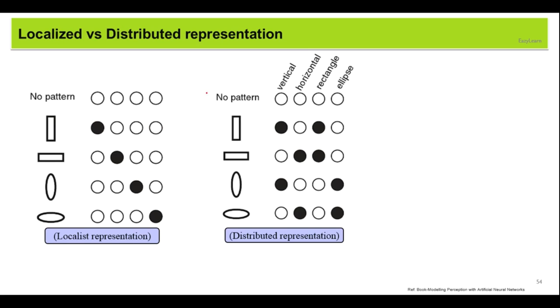But in case of distributed representation, we are going to represent them into some semantic space. For example, we can extract some properties like vertical, horizontal, rectangle, ellipse. So if we see this, this can be represented like this. Right? So this is a vertical box. This is a rectangle. For example, this is vertical, but not rectangle, but ellipse.